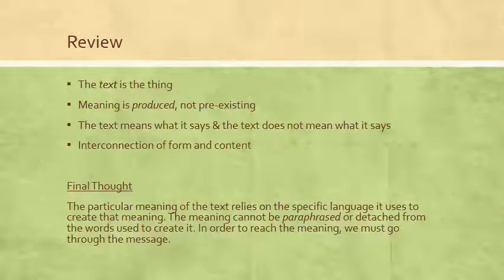So let's review. The most important concept in this first lecture is that the text itself is the thing. You want to focus on what is said on the page — what are the words that are there. Any ideas, any interpretations you come up with must be tied to the text, to the words on the page. You always have to go back to that as your source and origin of meaning and the object of your analysis. Meaning is produced, not pre-existing; meaning changes depending on who's reading, when and where a text is being read, how the language is organized, what specific words are there.